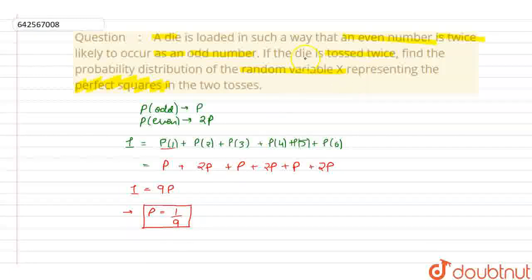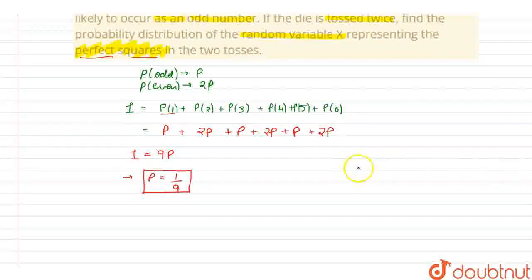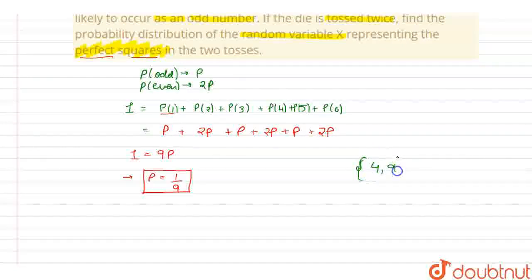Now, in the question it is given, if a die is rolled twice, find the probability distribution of random variable presenting the perfect square. For perfect square, the sample space will be 4 and 9. If two dice are rolled, the minimum sum that they can show is 1 plus 1, that is 2, and the maximum is 6 plus 6, that is 12. Perfect squares between 2 and 12 are only 9 and 4.